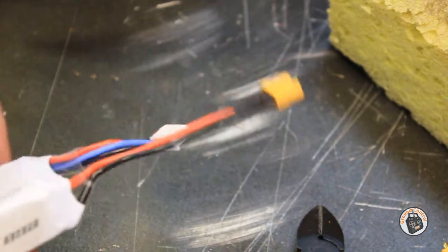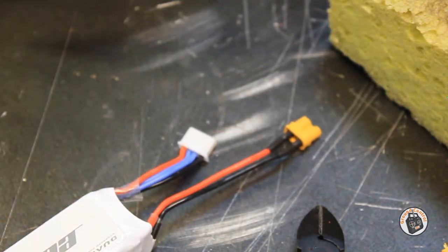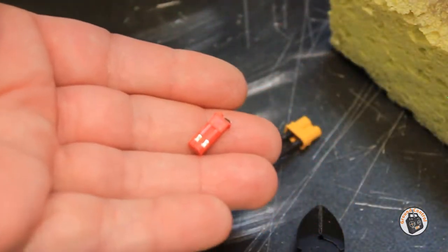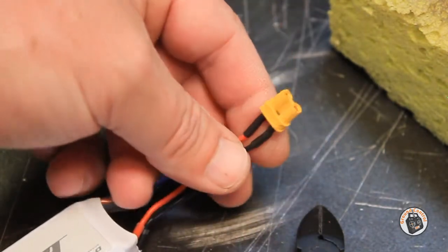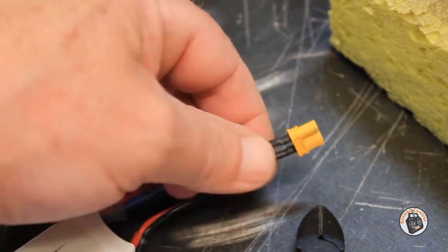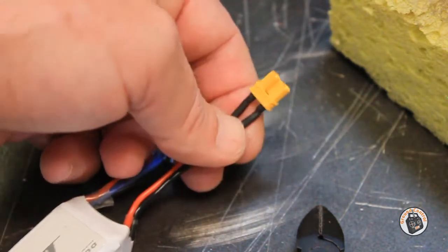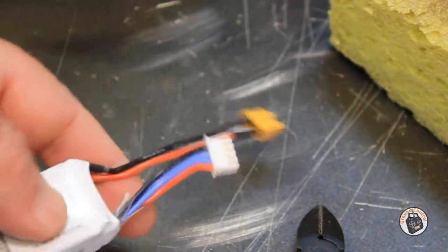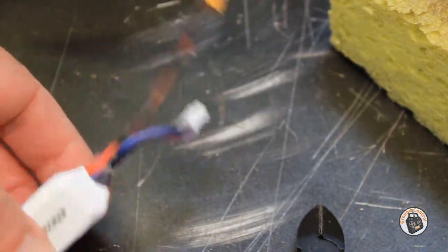There you go. There's a tutorial on how to replace the JST connector that you have on your battery or whatever type of connector you have on your battery to a different type of connector. In this case, an XT30. How to solder it to the XT30 connector. How to shrink your heat shrink. It's all pretty straightforward. And like anything, it just takes a little bit of practice. I hope you enjoyed this tutorial.